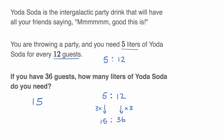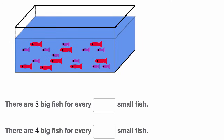Let's do another one of these. Here we just have a picture of a bunch of fish in a tank. It says there are eight big fish for every blank small fish, and then there are four big fish for every blank small fish. Pause this video again and see if you can work through this.